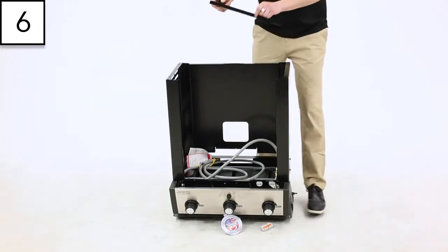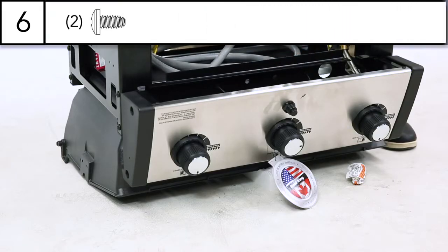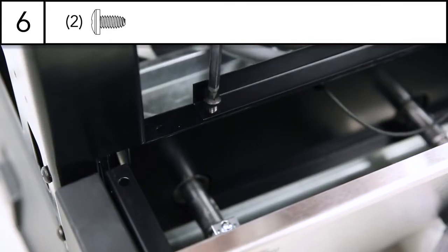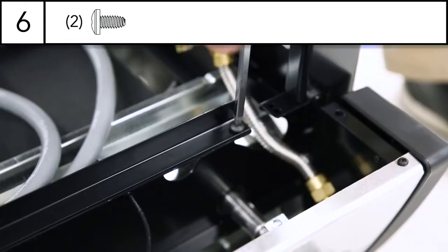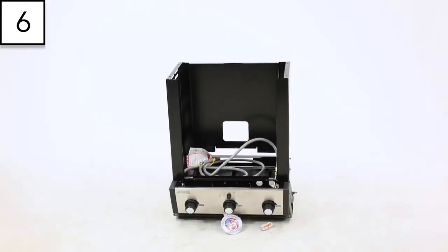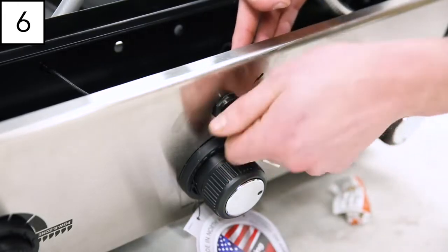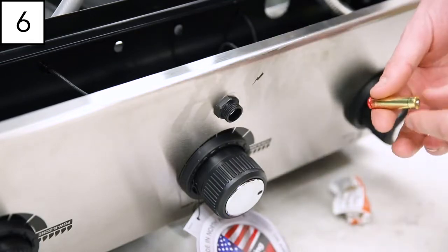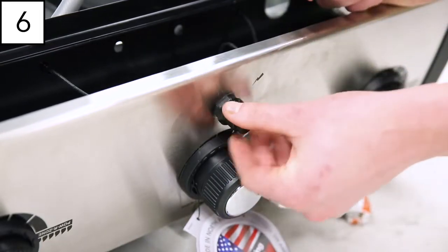Step 6. Install the door catch bracket. Align the outer holes on the bracket with the holes on the bottom of the interior front panel of the cook box. Secure using the two bolts provided. Install the battery in the igniter on the front panel of the cook box. Remove the cap, insert the battery with the positive terminal facing out, and replace the cap.